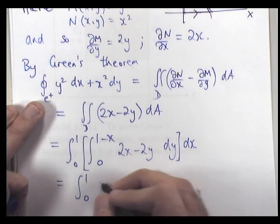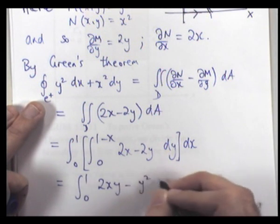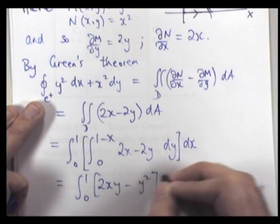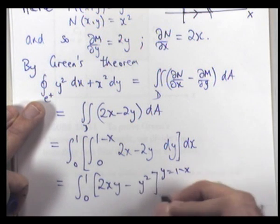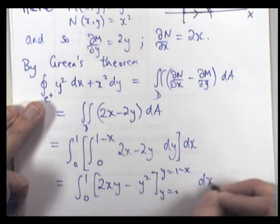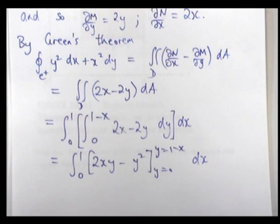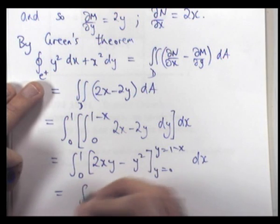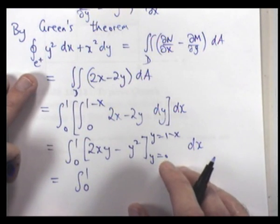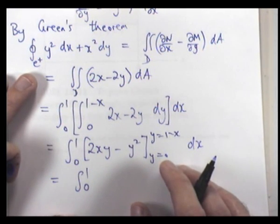So what we're going to get here, we're going to get something like 2xy minus y squared. Okay, if we substitute this in, you'll get something like this.